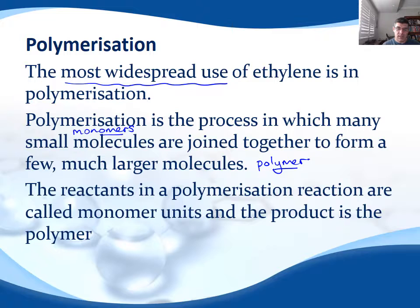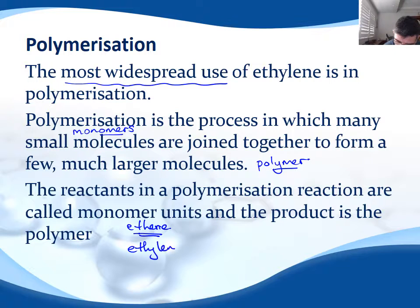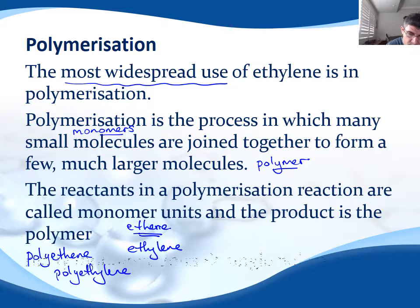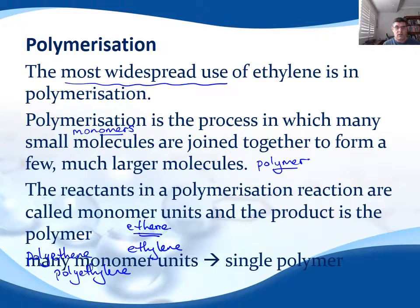The monomer units we're going to be focusing on here is ethene or ethylene, and the polymer is going to be polyethylene or polyethene. We need many of these monomer units to form a single polymer, and this could run into the hundreds and thousands of different monomers. So these are very long, very big, large molecular weight compounds.